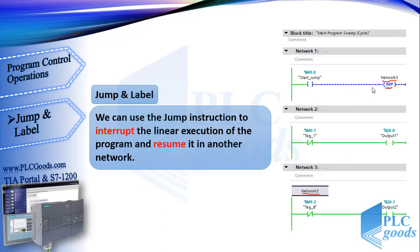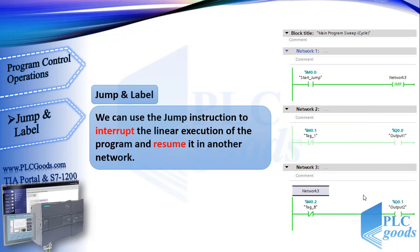Now this instruction is not activated, so the CPU runs all networks from the first to the last. When the jump instruction is activated, which refers to Network 3, the program execution jumps to Network 3 and the second network won't run.